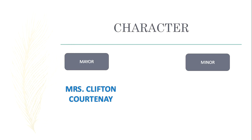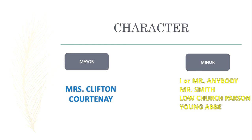First is 'I' or Mr. Anybody. He was a shy person. This can be proven from his awkwardness when sitting next to Mrs. Clifton. Second is Mr. Smith. He was 18 years old and he was not a confident person. It can be proven by his fright when Mrs. Clifton would misunderstand about him. And then the next are Low Church person, Young Abby, Sir Harry Bennett, and Mr. Jocelyn. All of them were wise persons, proven by their speech about the weaknesses and strengths of a woman.